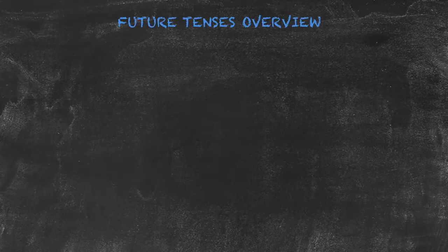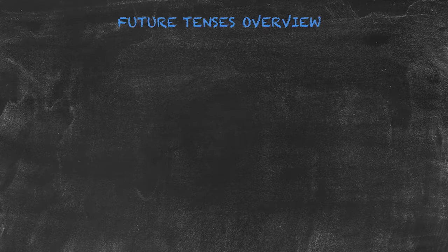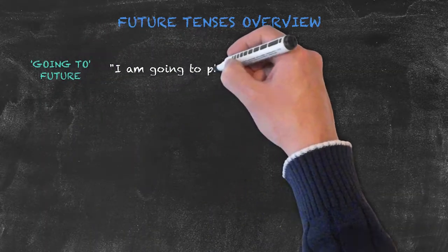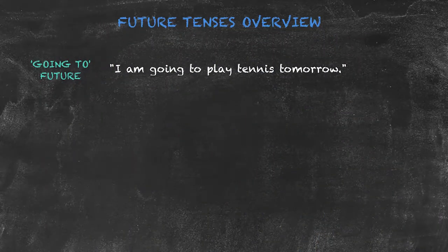There are also three additional tenses which can be used to express the future. As in our first example sentence here, this is the 'going to' future: I am going to play tennis tomorrow.